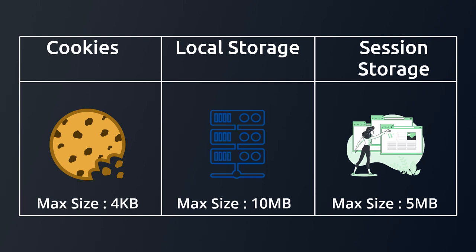The server sends the token or session ID to the client, and we need to store that token or session ID securely — that's where the problem of storing tokens or session IDs comes in. There are three types of storage mechanisms: the first is cookies, the second is local storage, and the third is session storage. Cookies have a maximum size of 4 kilobytes, local storage is the biggest at 10 megabytes, and session storage is about 5 megabytes. Session storage lasts only until the tab is open — once you close the tab, the data vanishes.